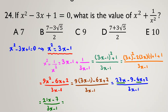In the numerator we can factor out 7, giving 7(3x minus 1), all over (3x minus 1). We can cancel (3x minus 1) — it is not zero, since x appears in the denominator of the original expression. After canceling, the result is 7. So the answer is 7.